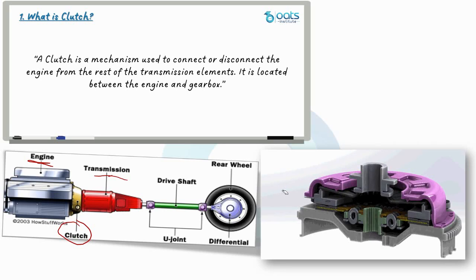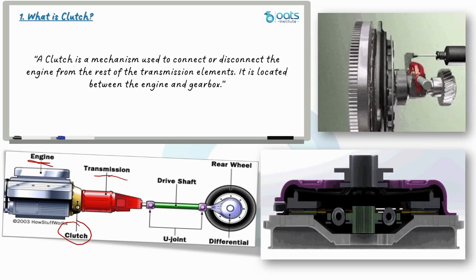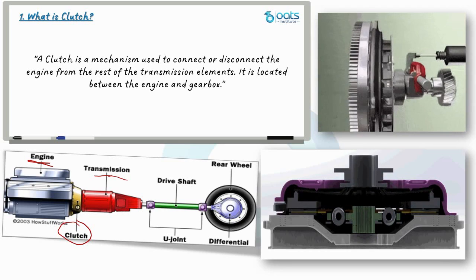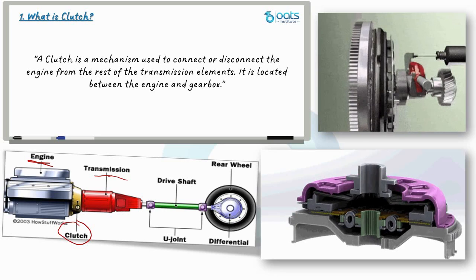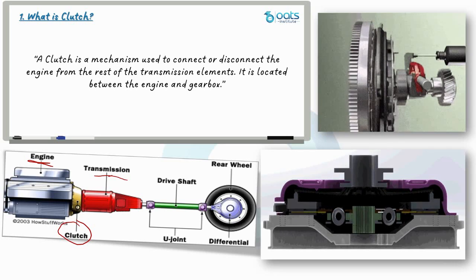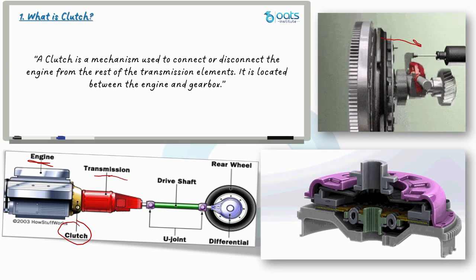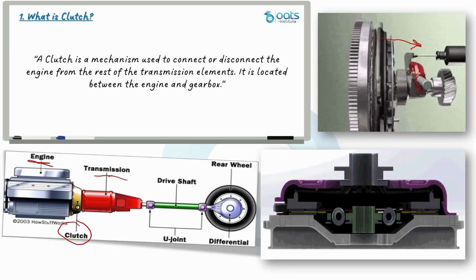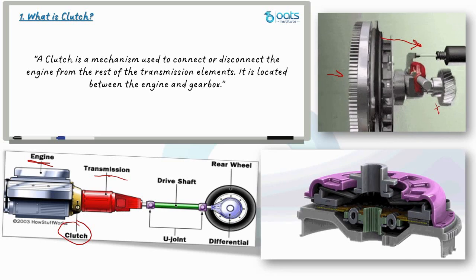But how does it all work? Check out this video to get a better idea of the clutch mechanism. When the clutch is engaged, the engine is connected to the transmission and the power is transmitted through the transmission system to the rear wheel. But when the clutch is disengaged by pressing the pedal, the engine disconnects from the transmission, preventing power from flowing to the rear wheel while the engine is still running.